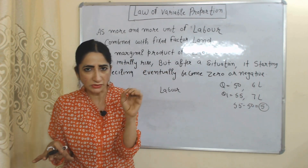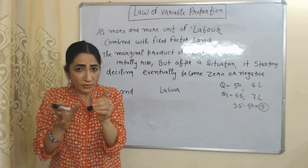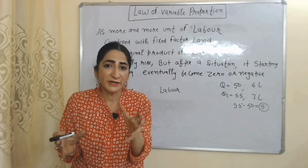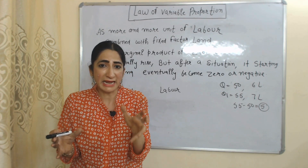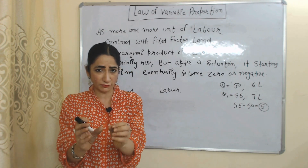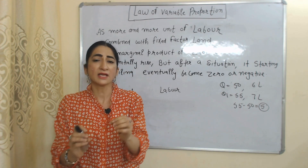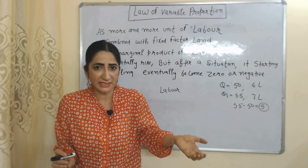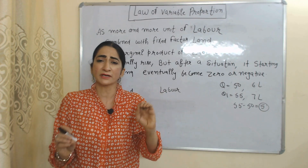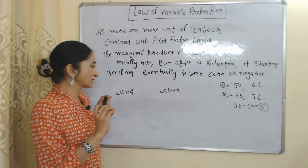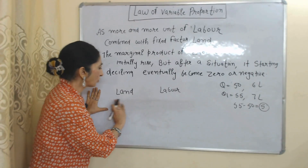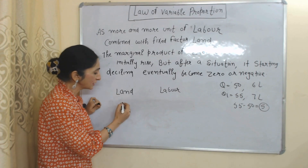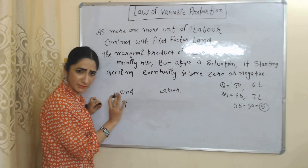According to this law, as more and more units of labor are combined with the fixed factor land, marginal product of labor initially increases. But after a certain time period, it starts declining and eventually becomes zero or negative. For example, in order to complete utilization of this land, we need 7 laborers.